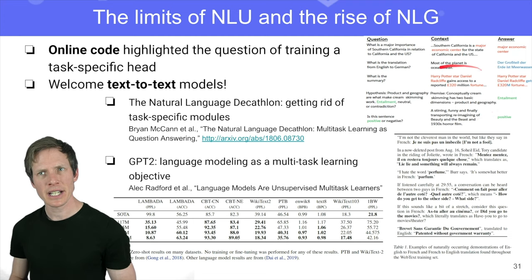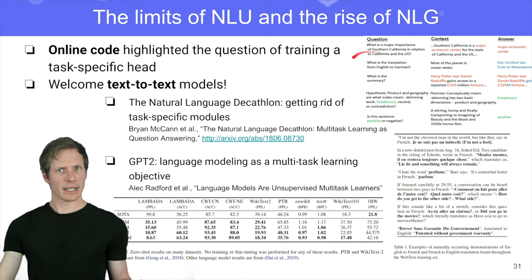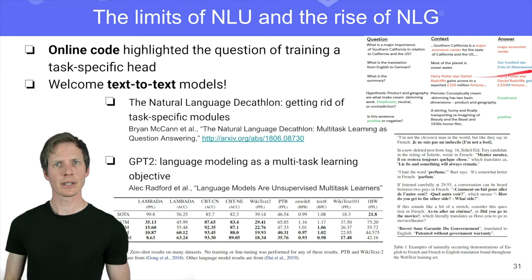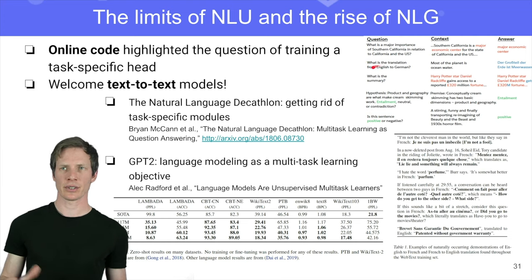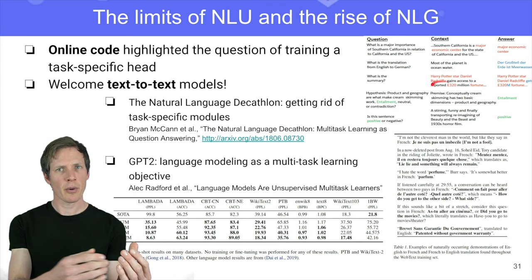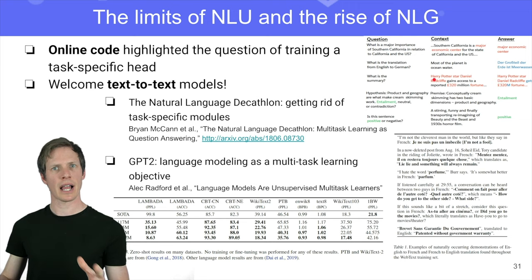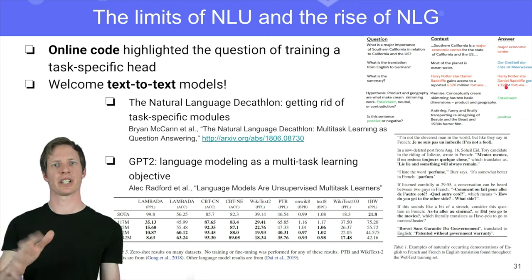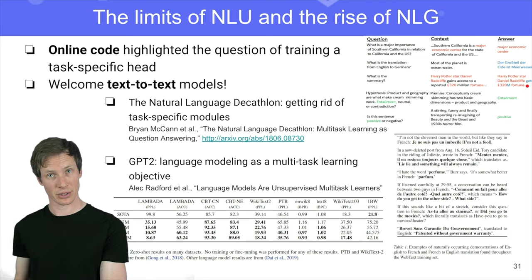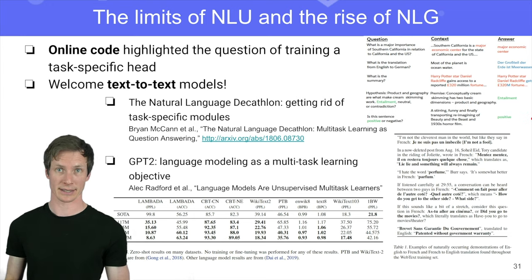So if you have translation, you would have a question which is 'translate this from English to German,' and then a context which is the English sentence. For summarization, you formulate it as a textual input: 'summarize this,' and then you have the news example. The model has to generate the output — the German translation or the summarization. So it's not a classification task, but a generation task.